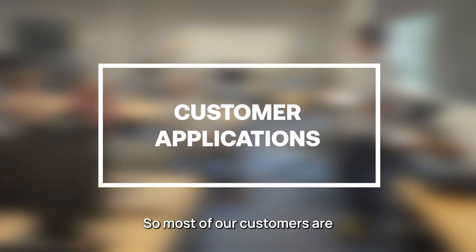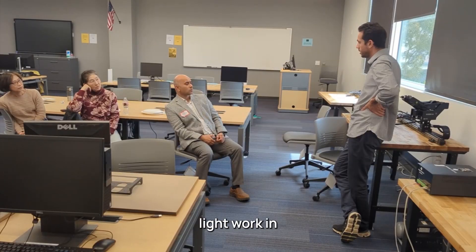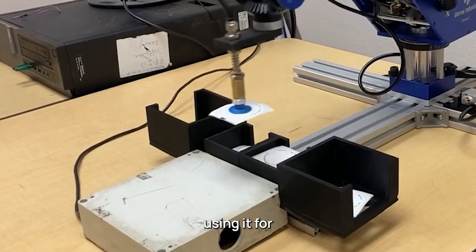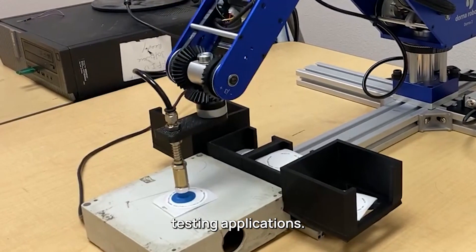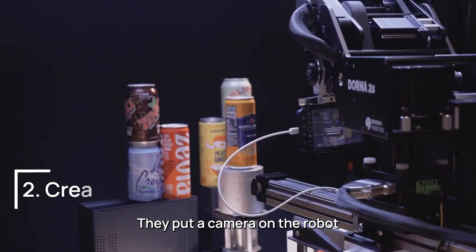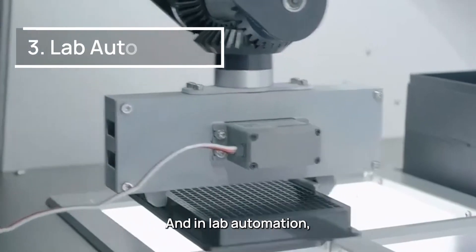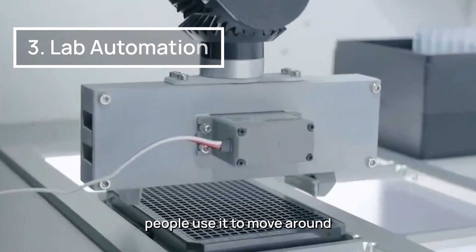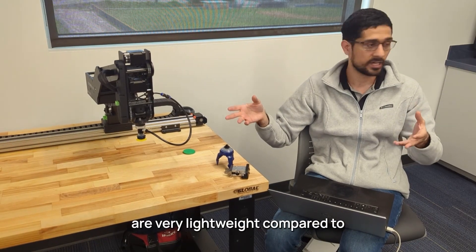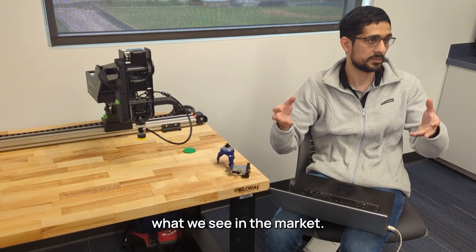Most of our customers usually use it for light work, like assembly lines and packaging. Then a lot of customers use it for testing applications. We have a lot of people from the film industry who put a camera on the robot. Others use it to move around lab materials. So these are the ones that are very common from what we see in the market.